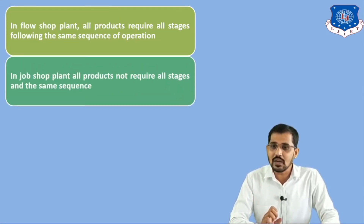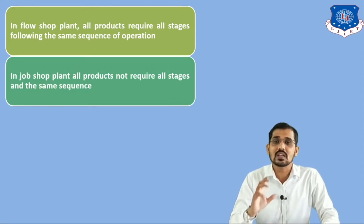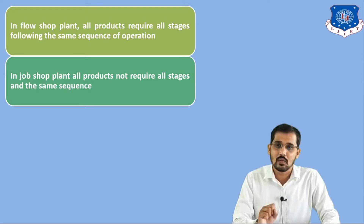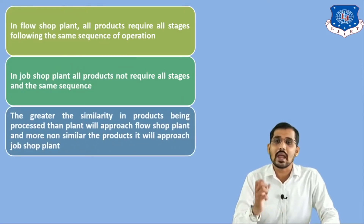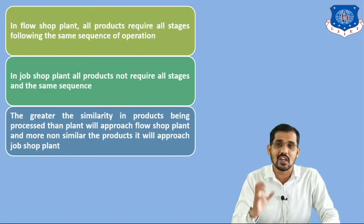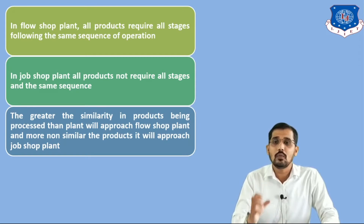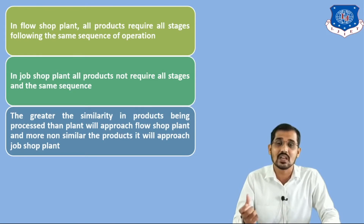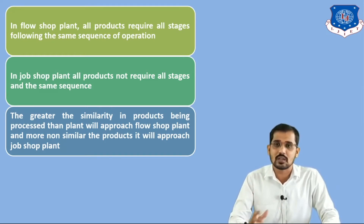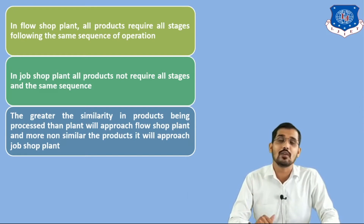The second point is related to the job shop plant. This is completely opposite to the flow shop plant. In this plant, all products do not require the same number of stages and the same sequence. The greater the similarity in the products, the more we will go for the flow shop plant, because similar products require a similar number of stages. But if the products are not similar in nature, we will go for the job shop plant, because different products require different numbers of stages and different sequences.